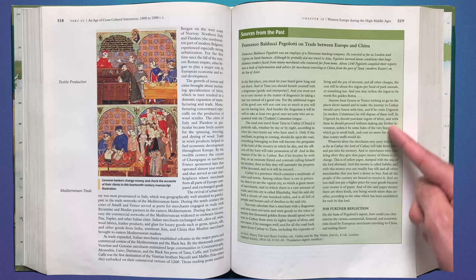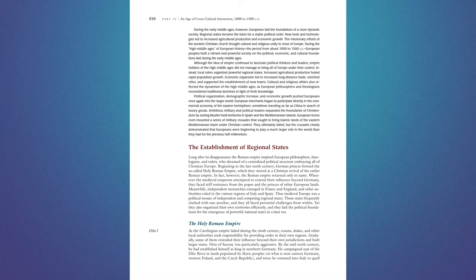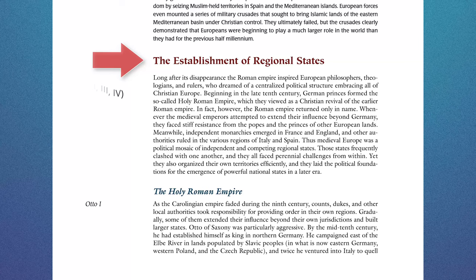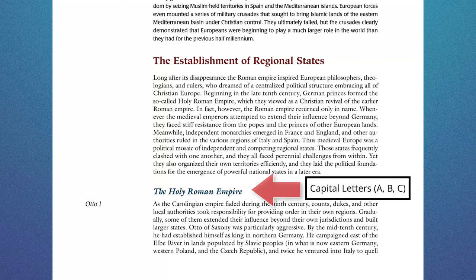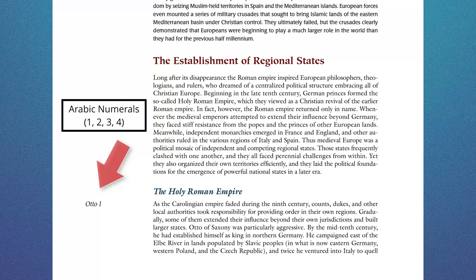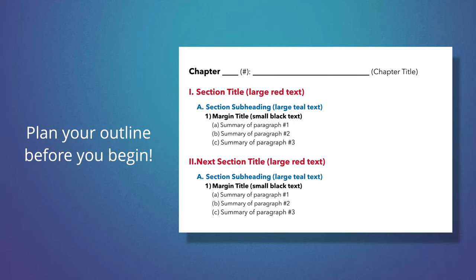Let's return to the beginning of the chapter and decide how to organize our outline. Since the red heading appears first and is the biggest heading in terms of font size, we will designate a Roman numeral for it in our outline. The blue heading of The Holy Roman Empire supports the main idea of the section and will be assigned capital letters. We will use Arabic numerals to represent the small margin titles. It's very important to decide how you will organize the various section titles and subsections before you begin outlining, and to be consistent with your labeling.